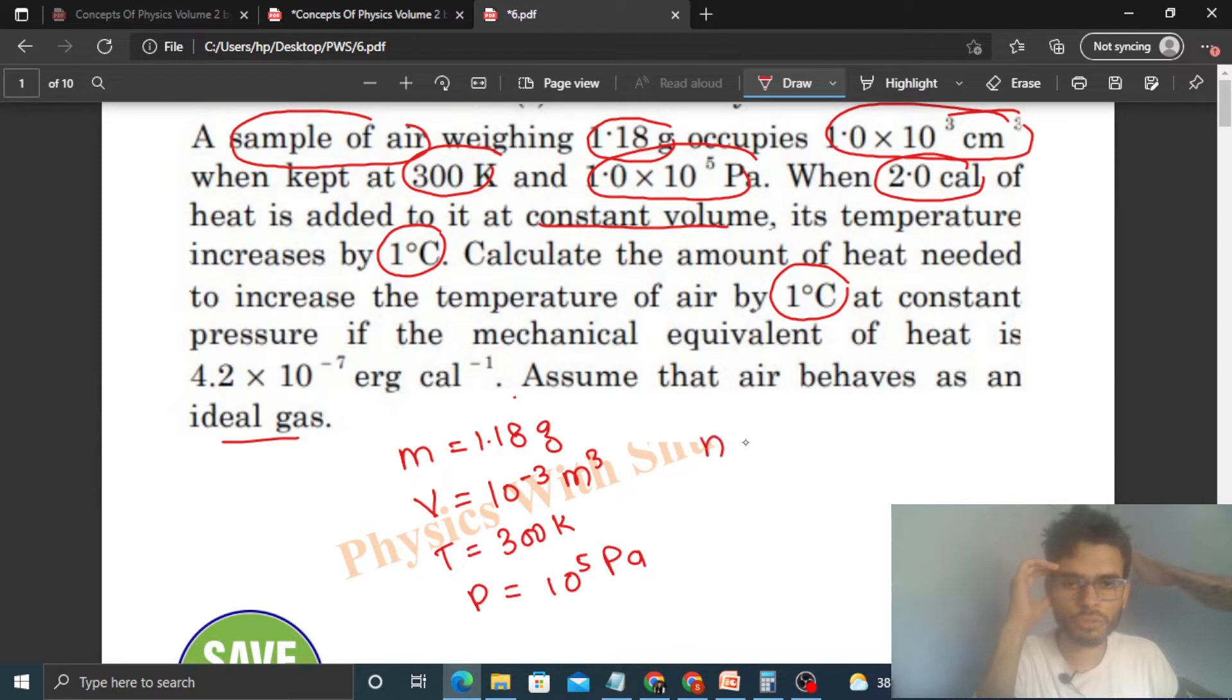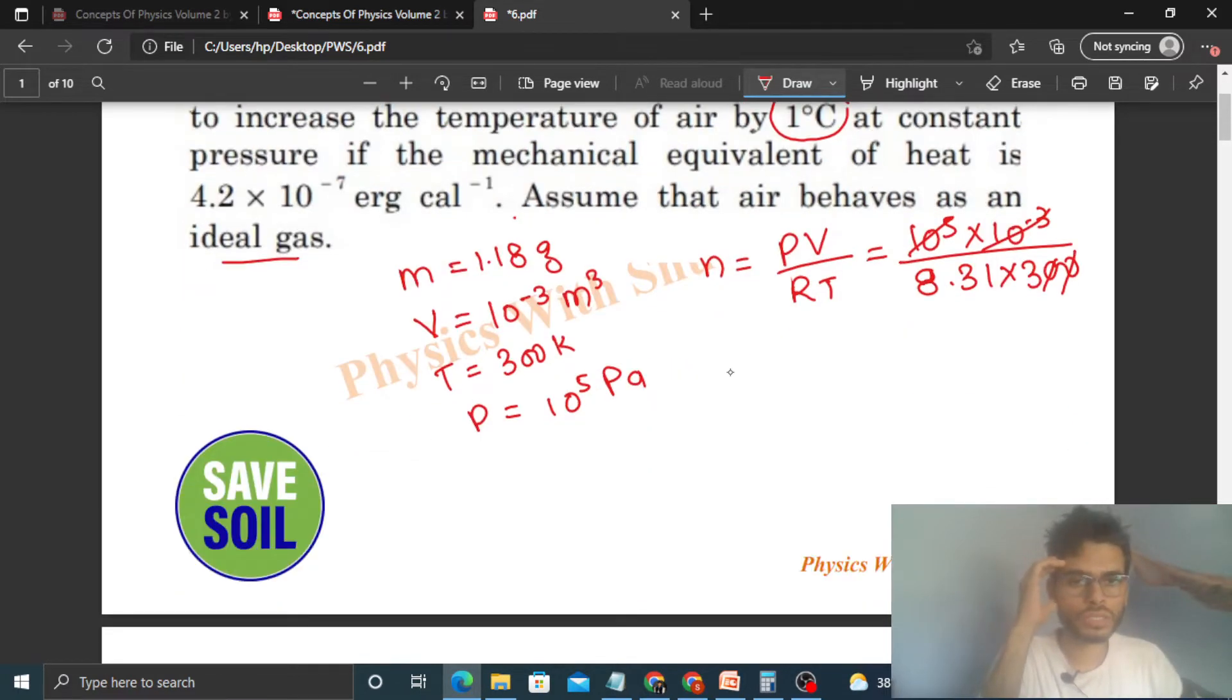Can you find out number of moles of air sample? That will be PV by RT. So you can just put the values, pressure 10 raised to the power 5, volume 10 raised to the power minus 3, R that is 8.31 into temperature that is 300. So they go, ye cancel ho jayega. So what you are getting, number of moles that is equal to 1 upon 3 into 8.31 moles.